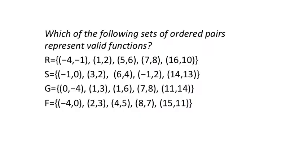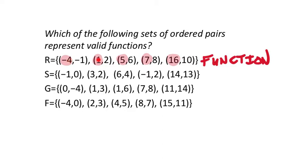We want to determine which of these sets are functions. Sets are usually notated with capital letters and fancy brackets. Look at the x values: negative 4, 1, 5, 7, and 16. None of these x values repeat, so there's no indication of malfunction. This one is a function. If x values repeat, we'd have to check what's coming out of the machine.